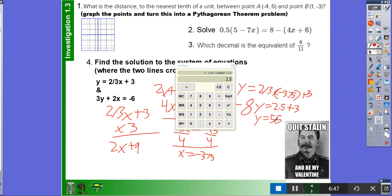And then so your x would be negative 3.75, and then your y would be equal to 5.5.